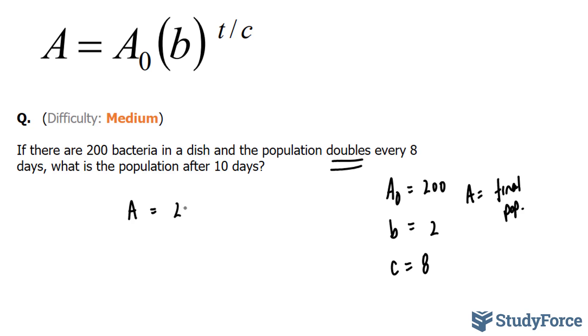A is equal to 200 times b, which is 2, to the power of t over 8.